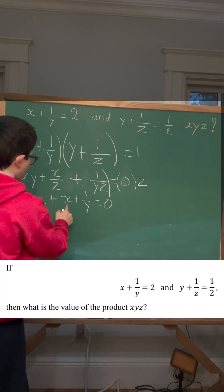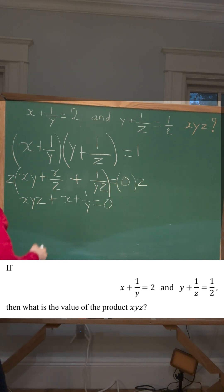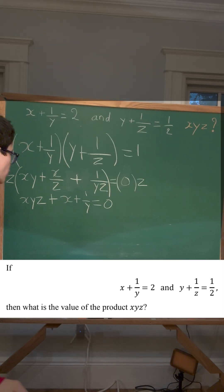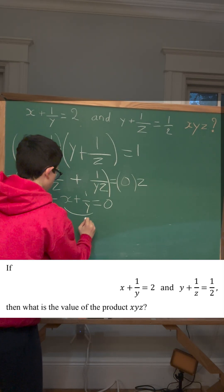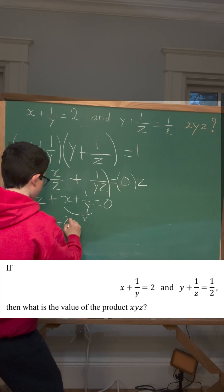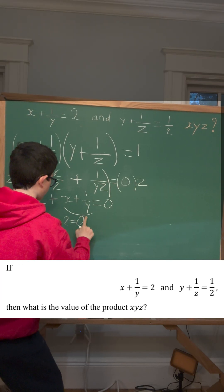We see that x plus 1 over y is the same as x plus 1 over y in this equation, and we know that x plus 1 over y equals 2. So we can just substitute 2 here. That means that xyz plus 2 equals 0.